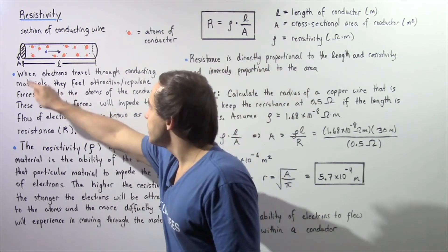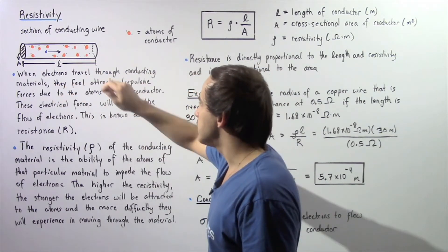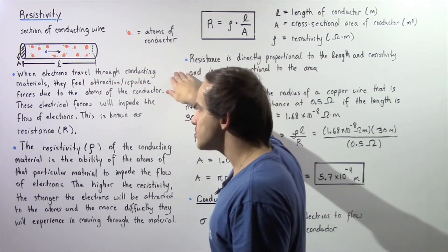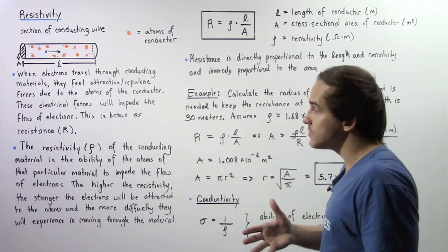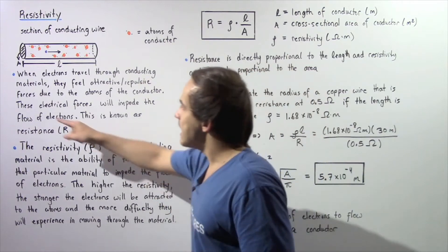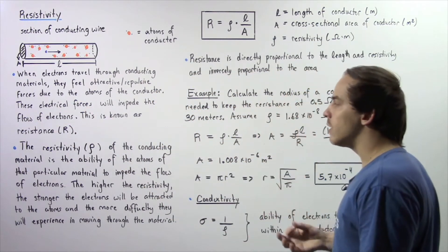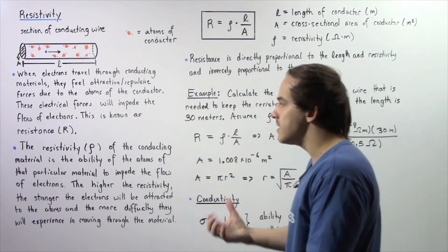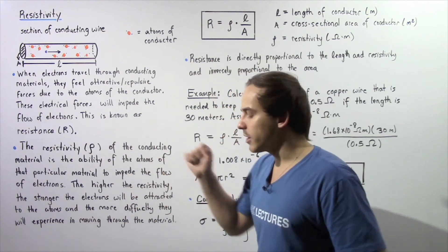Once again, when electrons travel through conducting materials, they feel attractive and repulsive forces as a result of the atoms of our conducting materials—the protons and the electrons. These electrical forces will impede the flow of electrons, and this concept is known as resistance, given by a capital R.